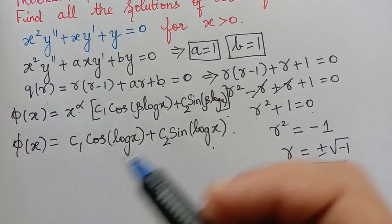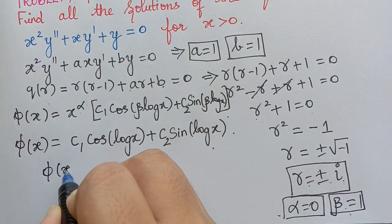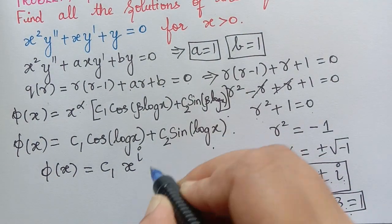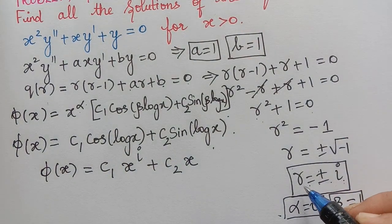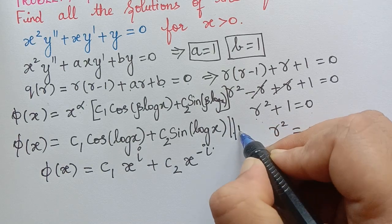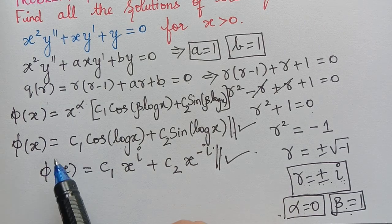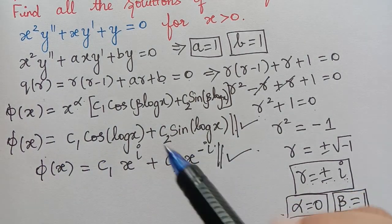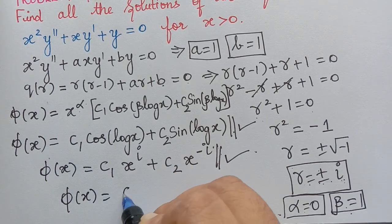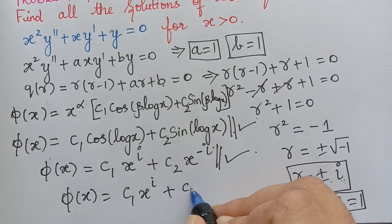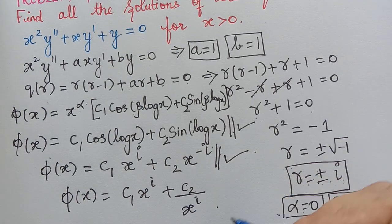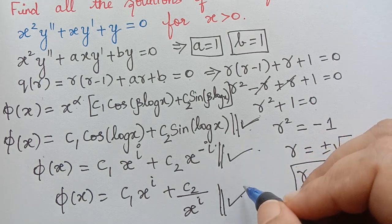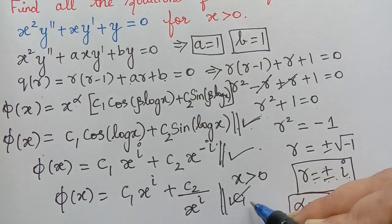We can also directly write the solution using the formula φ(x) = c1·x^r1 + c2·x^r2. Here r1 = i and r2 = −i, so φ(x) = c1·x^i + c2·x^(−i), which can also be written as c1·x^i + c2 / x^i. Either form is acceptable. Here x > 0 and c1, c2 are constants.